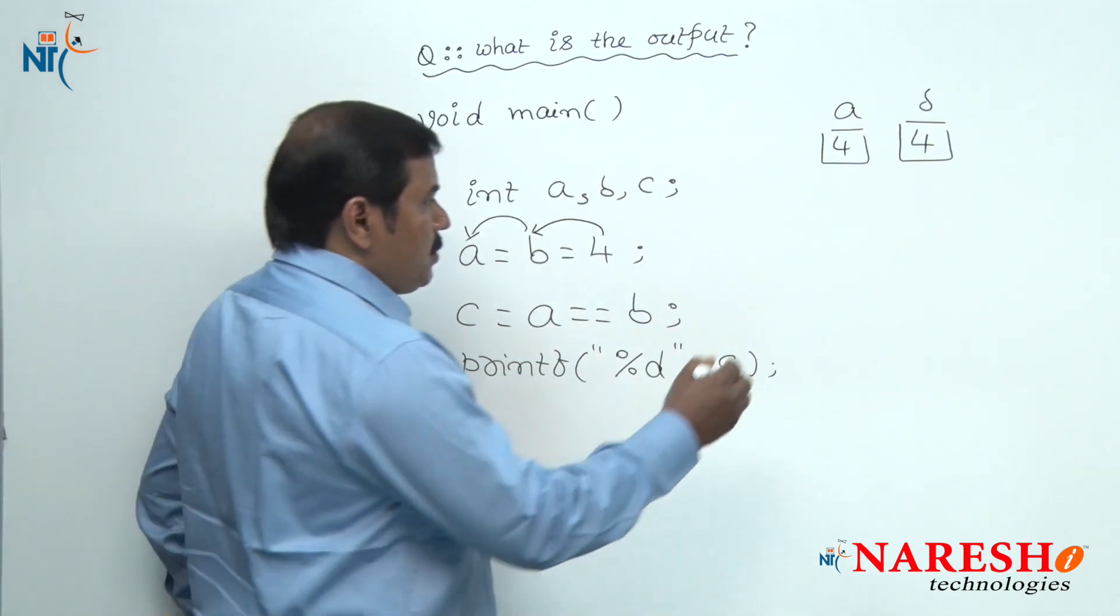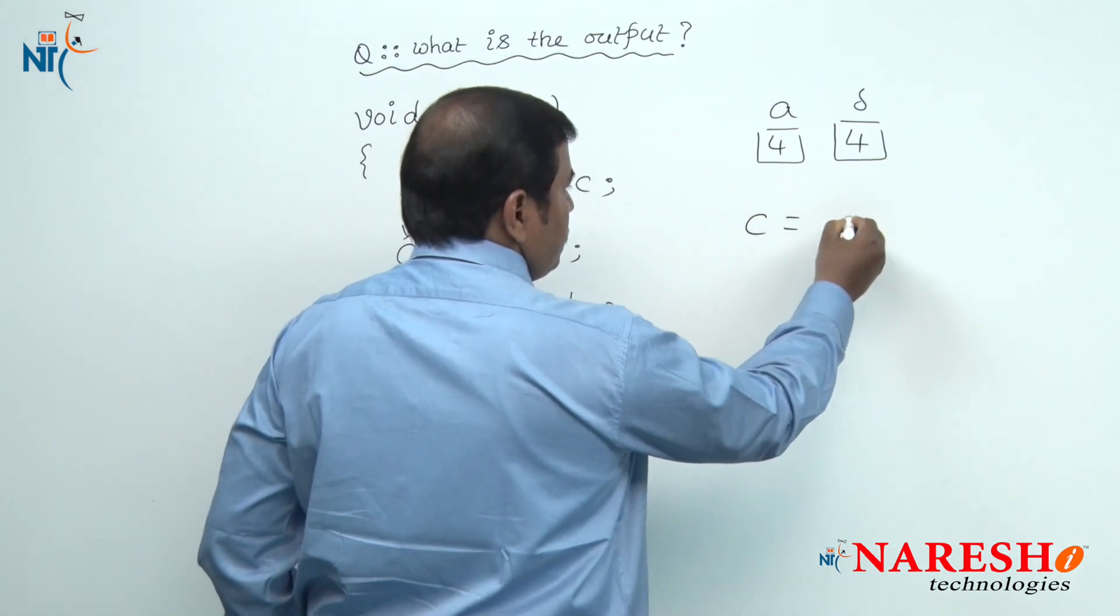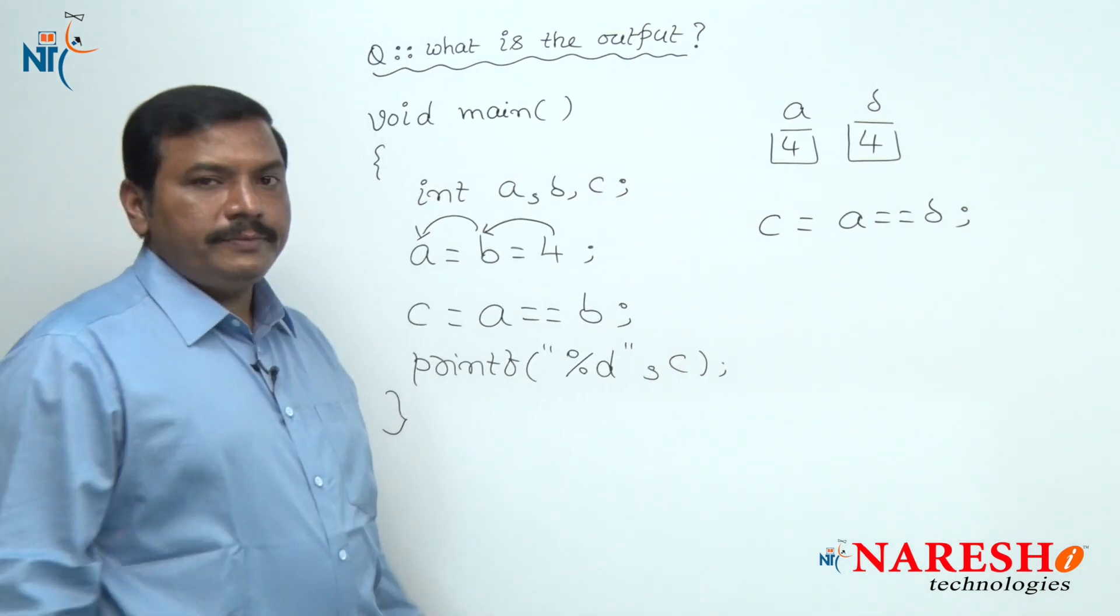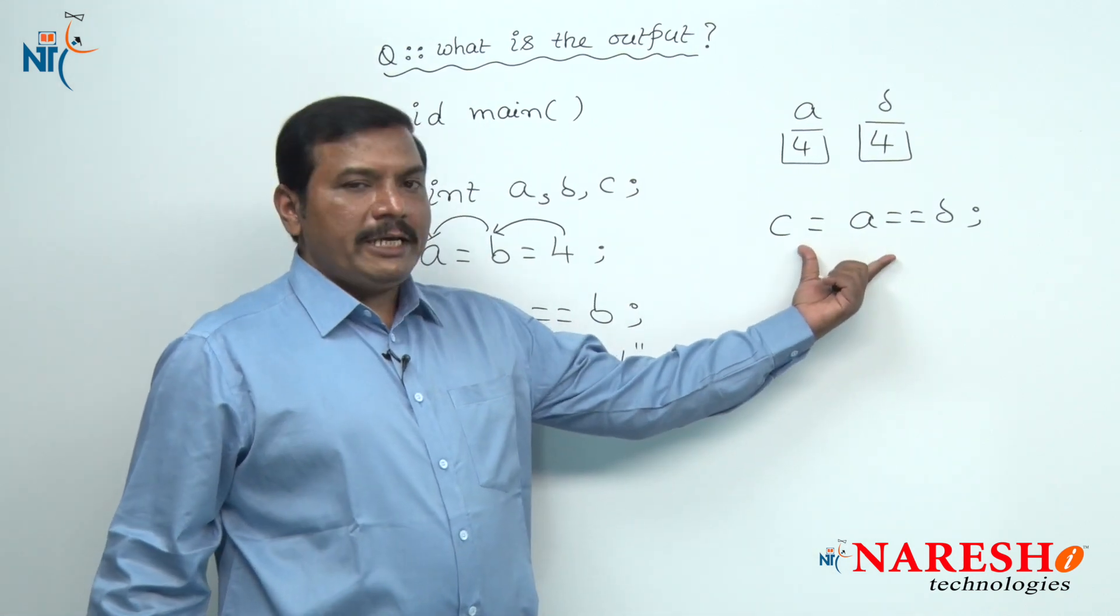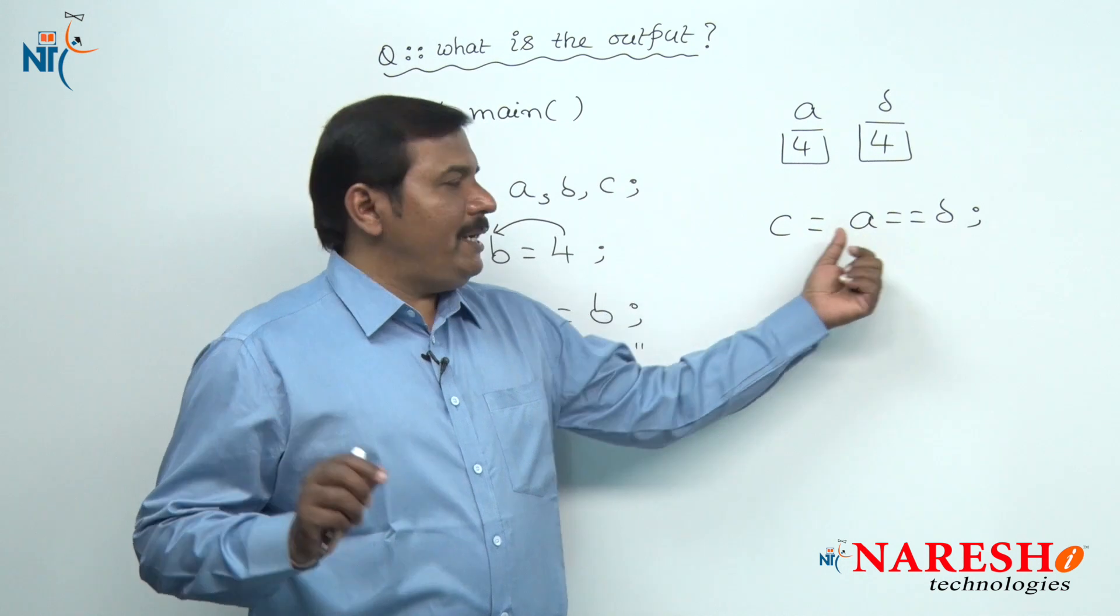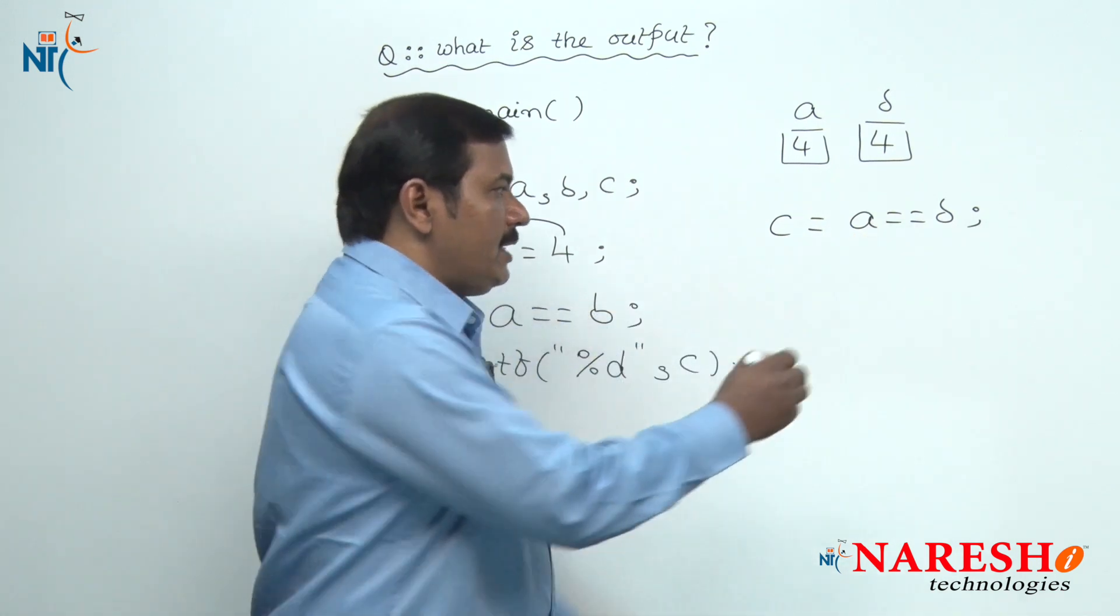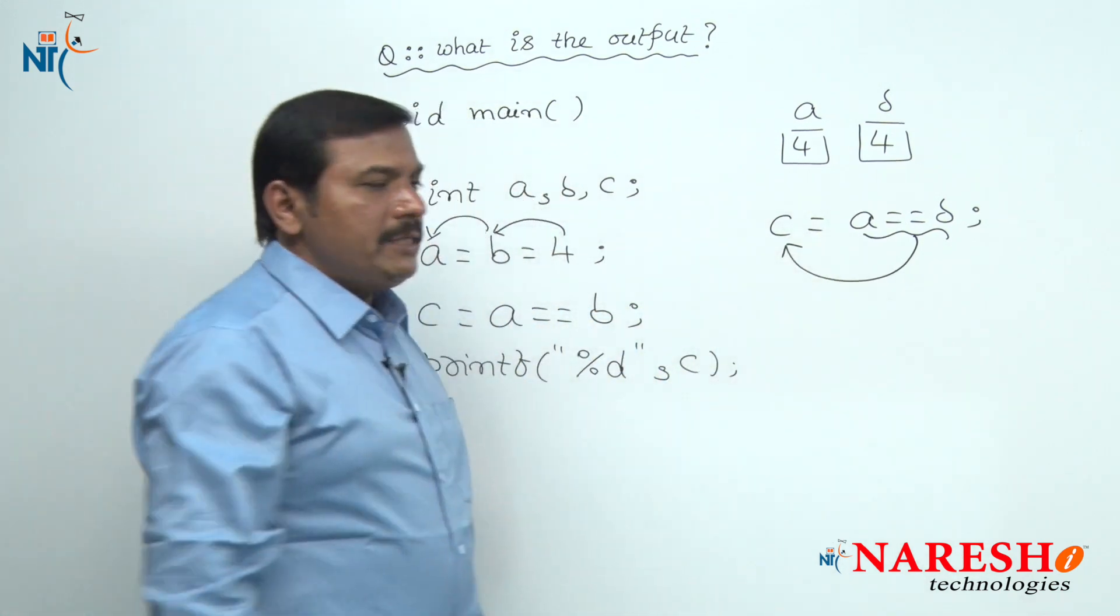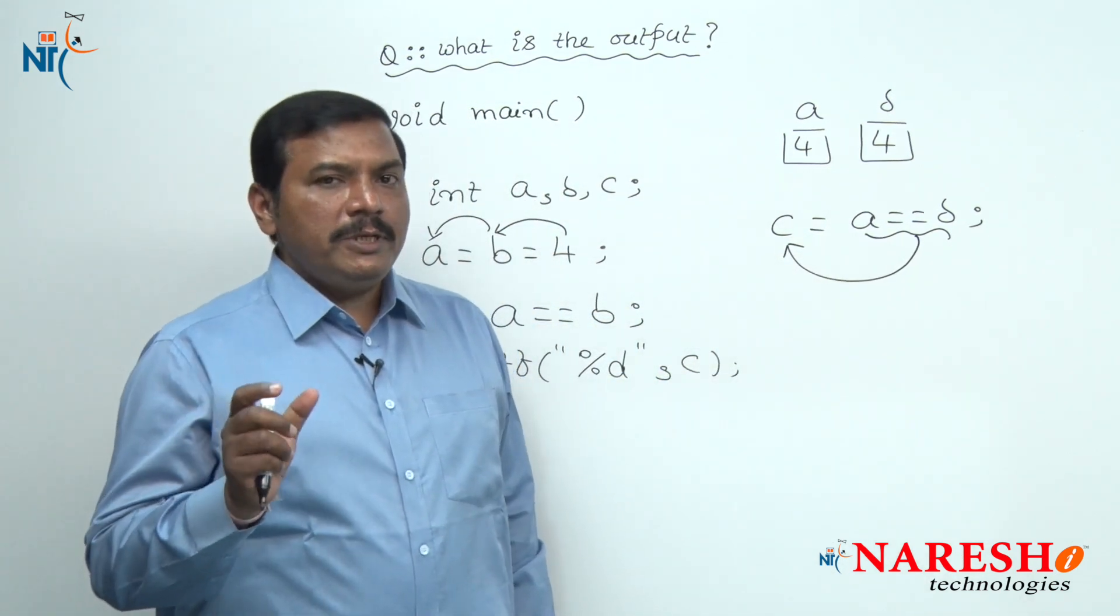Now let us watch the evaluation of this relational expression A equals B. In this assignment expression, the right side expression is evaluated first, and the obtained result is stored inside the left side variable C.